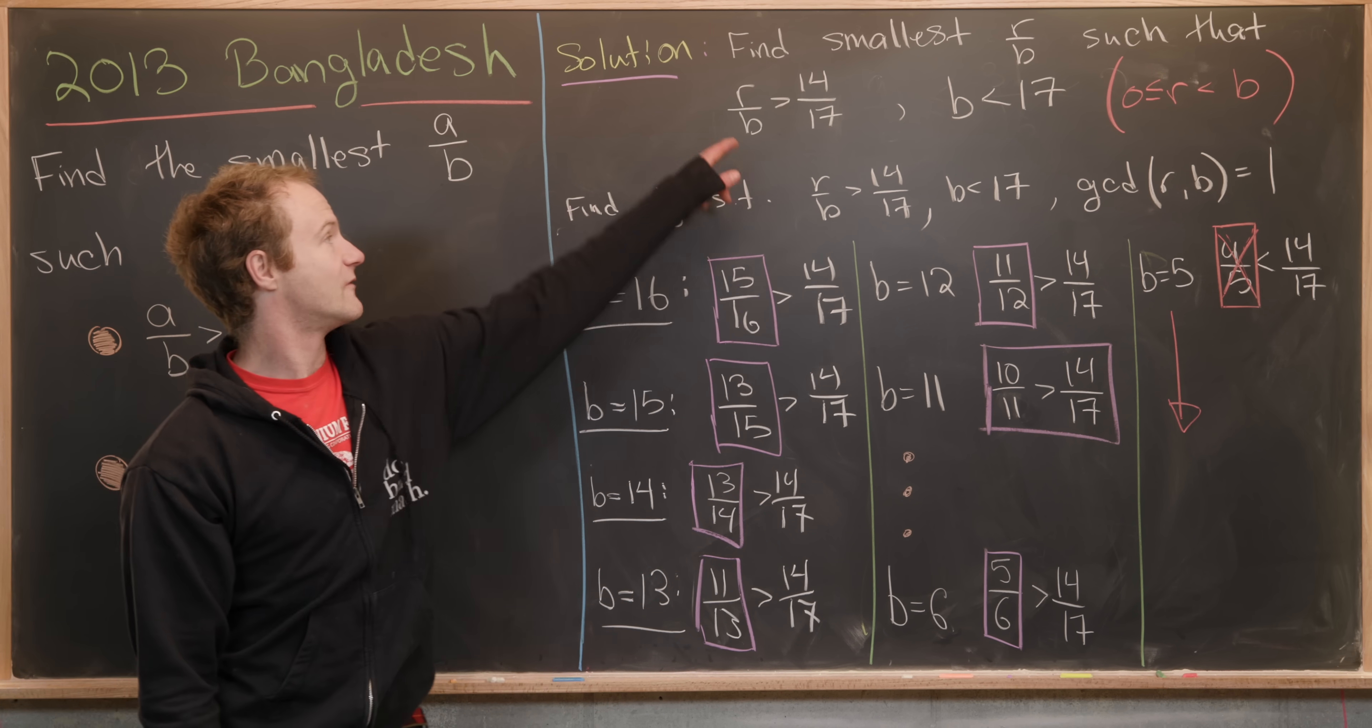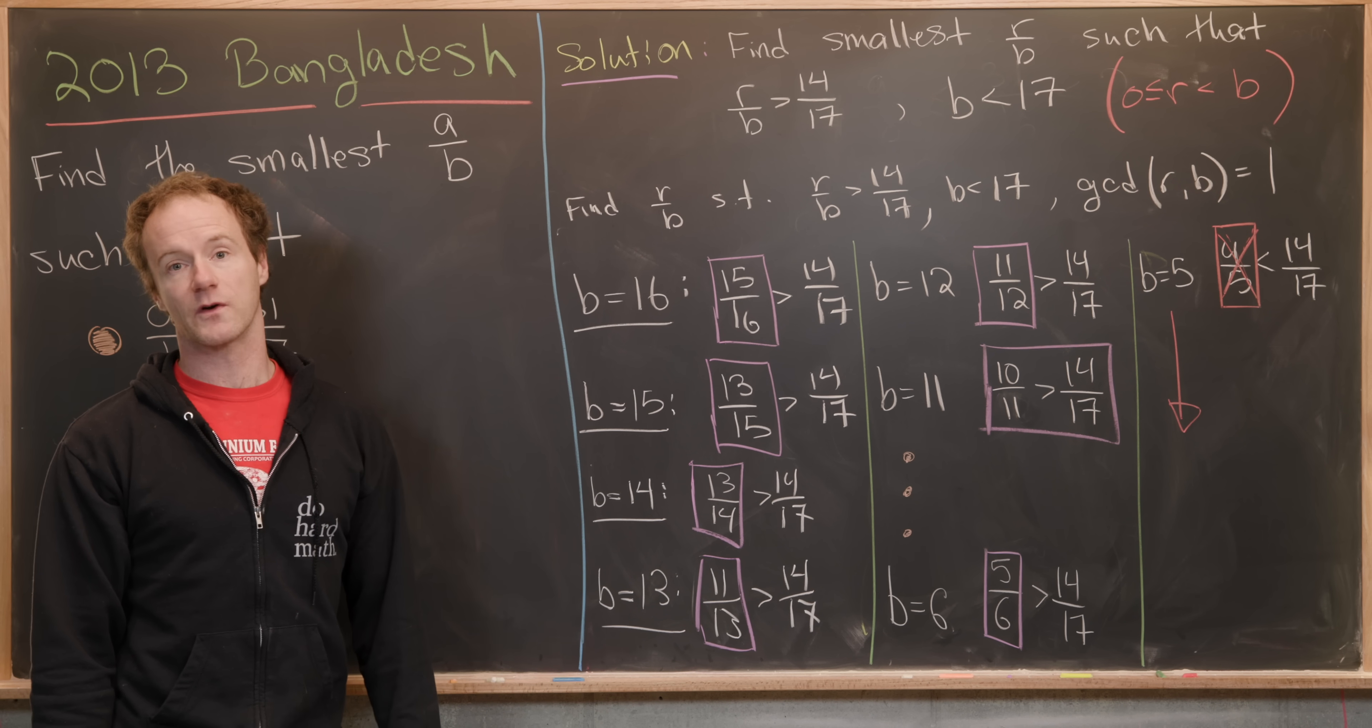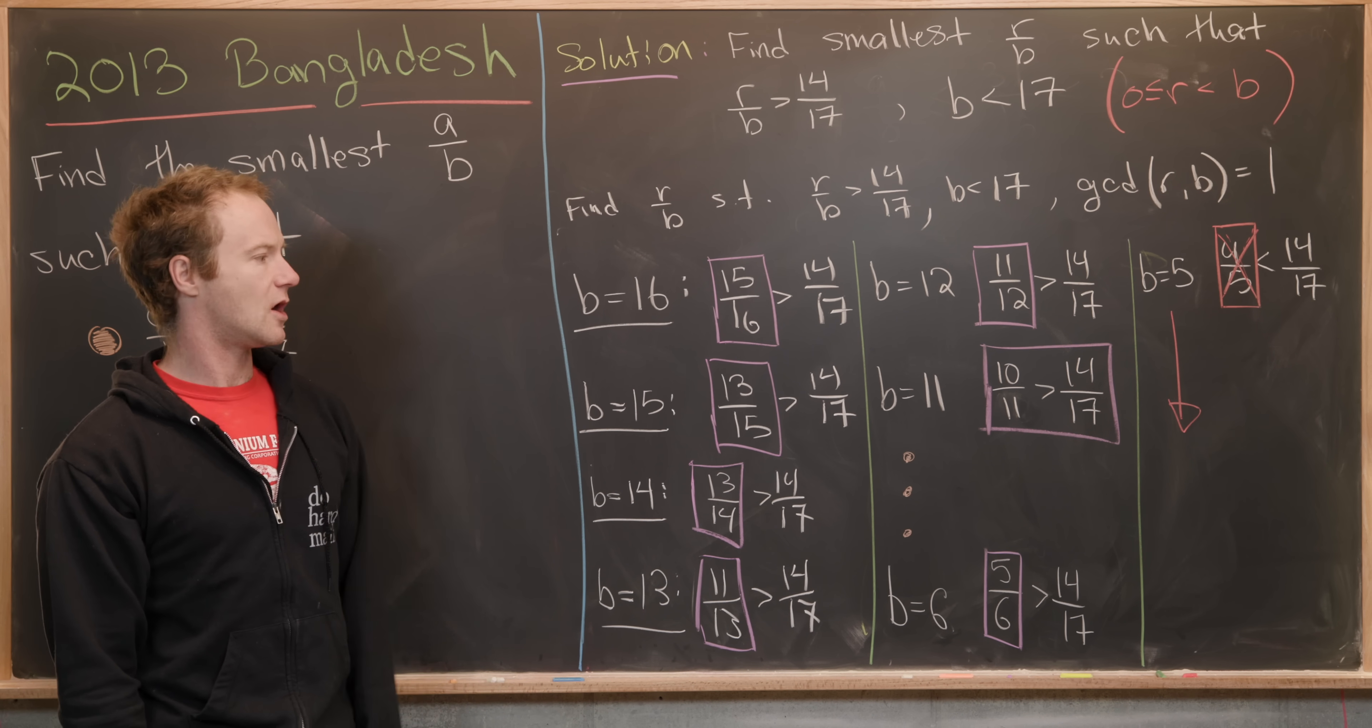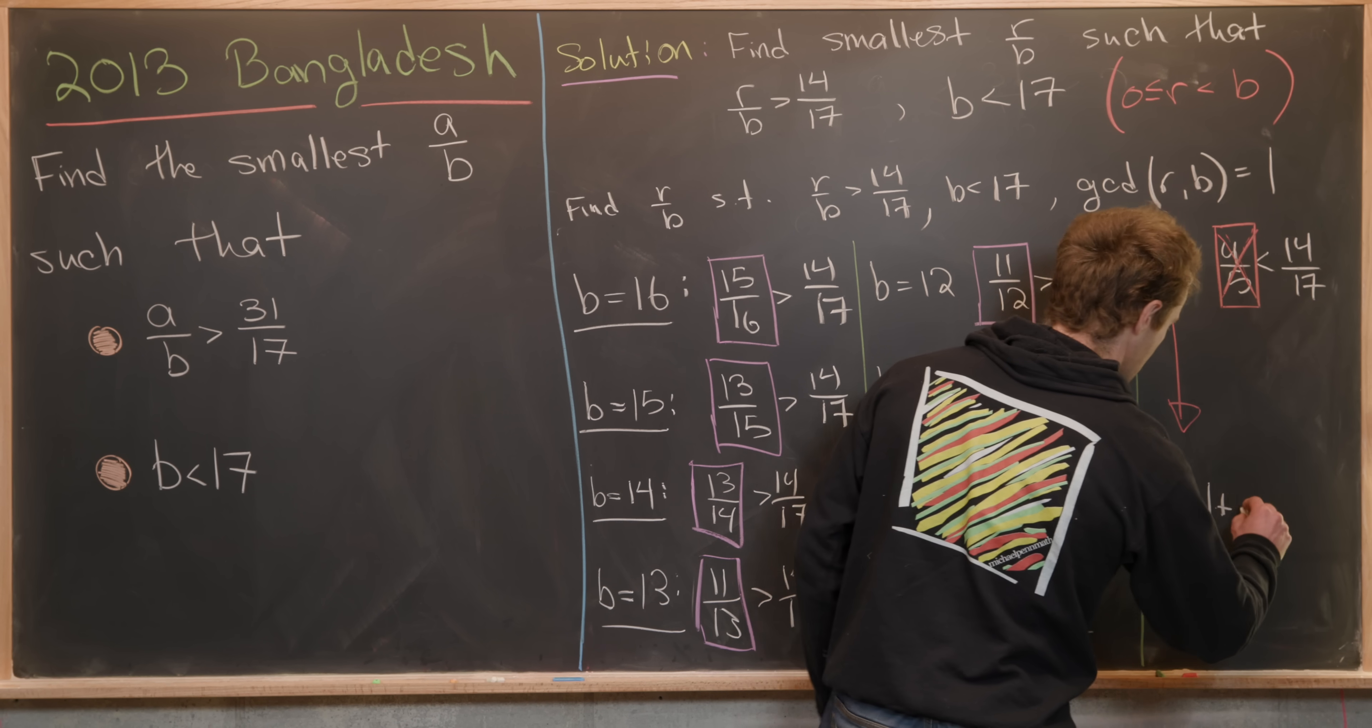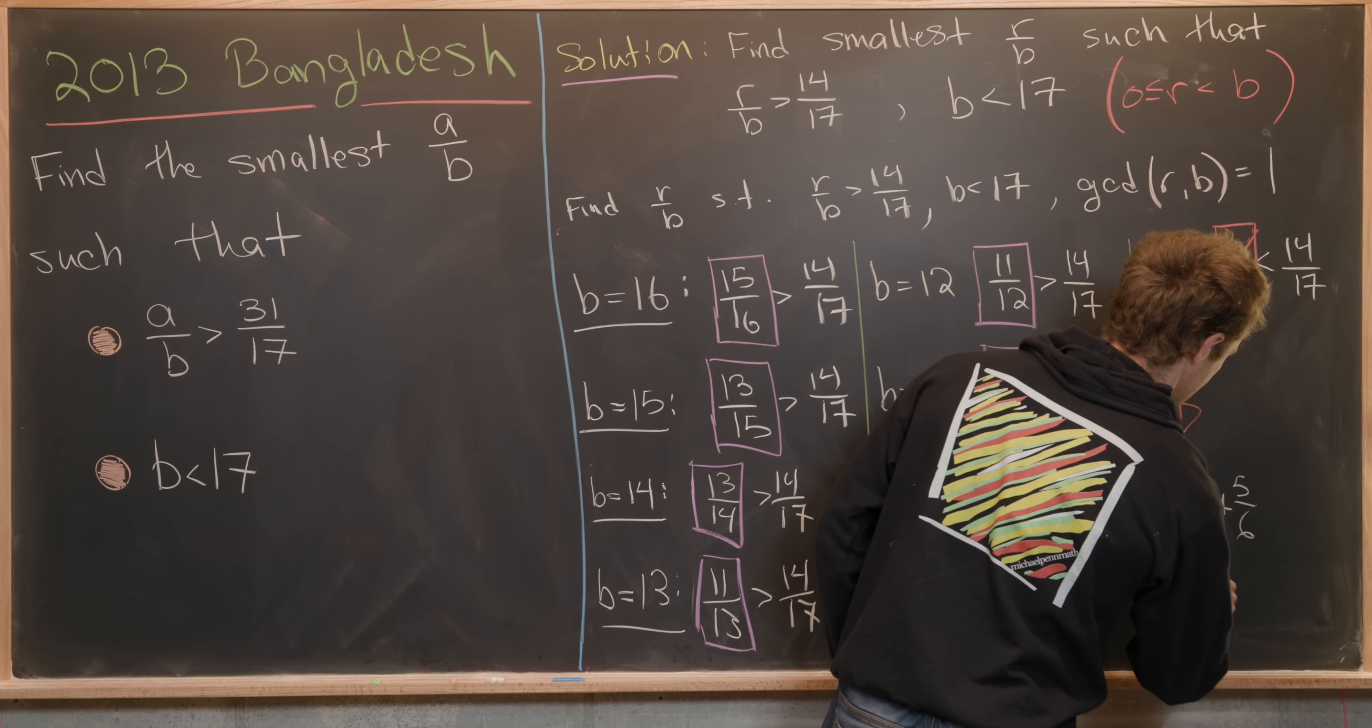So that means five over six is our R over B. But let's recall that our A over B was equal to one plus R over B, which is one plus five over six.